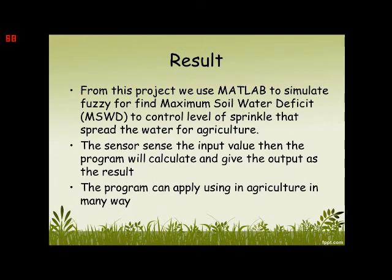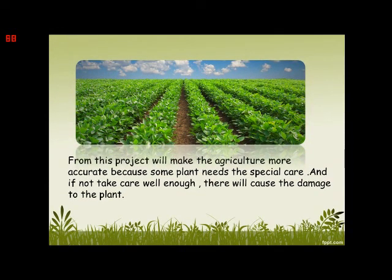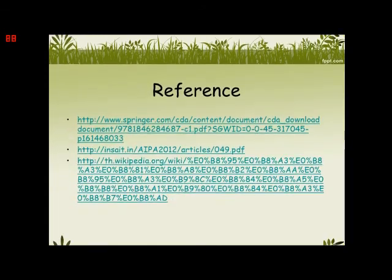From the result of this project, we use MATLAB to simulate FASC from five maximum soil water deficit (MSWD) values to control the level of the sprinkler that sprays water for agriculture. The sensor sends the input value, then the program calculates and gives the output. The program can be applied to agriculture in many ways. This project will make agriculture more accurate, because some plants need special care, and if not taken care of well enough, this will cause damage to the plants. Thank you for watching our video.